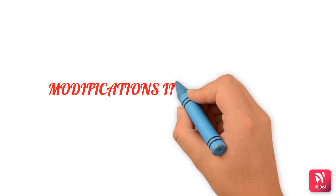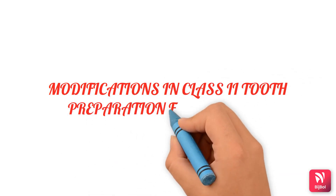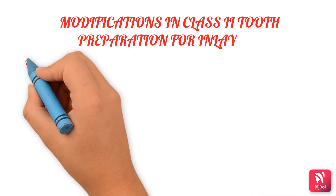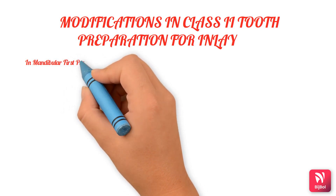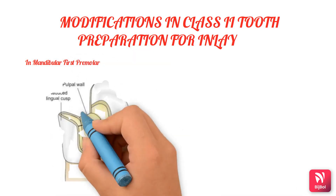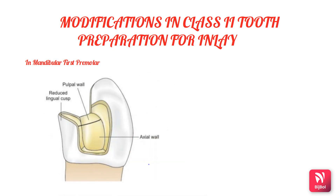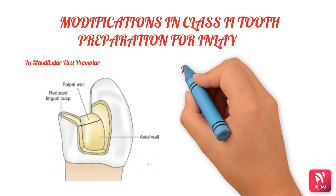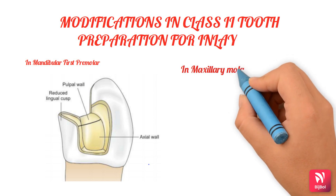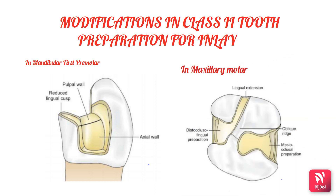Modifications in class 2 preparations for an inlay: the anatomy of the mandibular first premolar requires special attention. The smaller lingual cusp may require occlusal cusp capping when indicated, and occlusal depth should not be more than 2 mm. The transverse ridge is strong and should be conserved. For maxillary molars, the oblique ridge provides strength to the tooth. When it is sound and unaffected by caries, preparation should be done on the mesial and distal sides as two separate preparations instead of one MOD cavity.